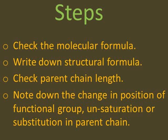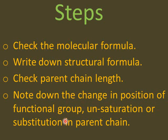What steps do we have to take to carry out proper position isomerism? First of all, we have to check the molecular formula, as molecular formula tells us about the number of atoms and about which type of atoms we are using. In organic chemistry we are using carbon, hydrogen and oxygen — these are hydrocarbons. Then we have to write the structural formula, as structural formula is an extended form, giving us information about the number of bonds and the composition. Then we have to check the parent chain length, which will not change in case of position isomerism. The change in position of the functional group, unsaturation, or substituent in a parent chain will take place.